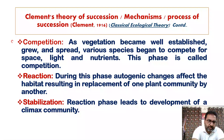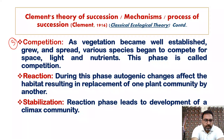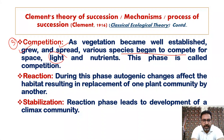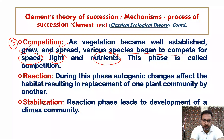The third step is competition. As the vegetation — those propagules which established themselves — becomes well established, they grow and spread, and various species begin to compete for space, light, and nutrients. With the establishment of those propagules and certain species, there is competition among themselves so that they can grow and spread. This very phase is called competition.